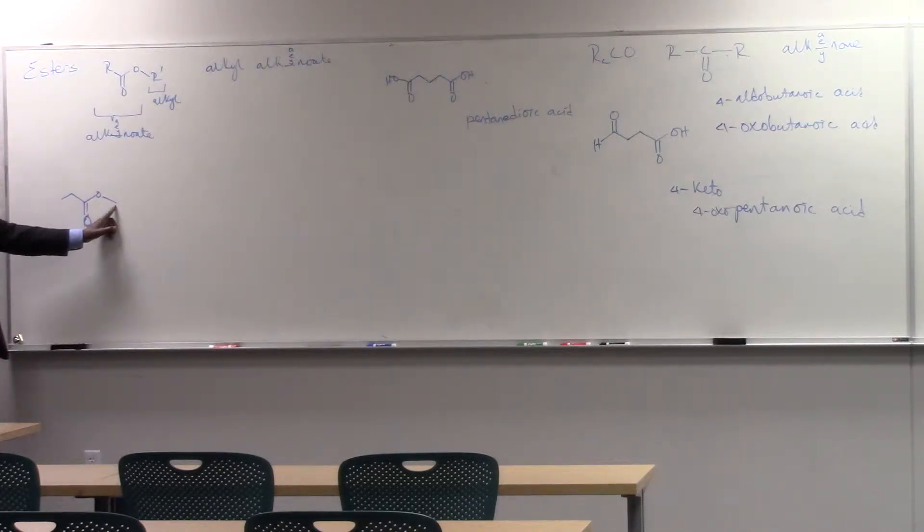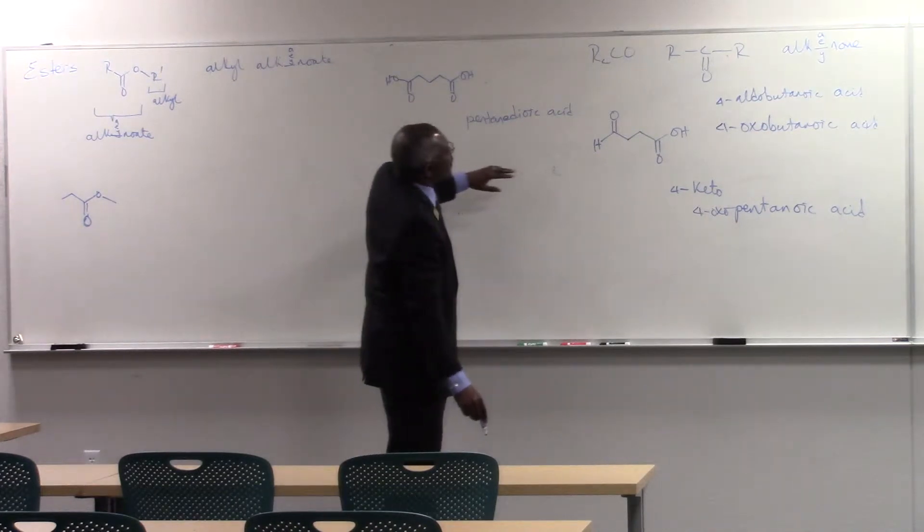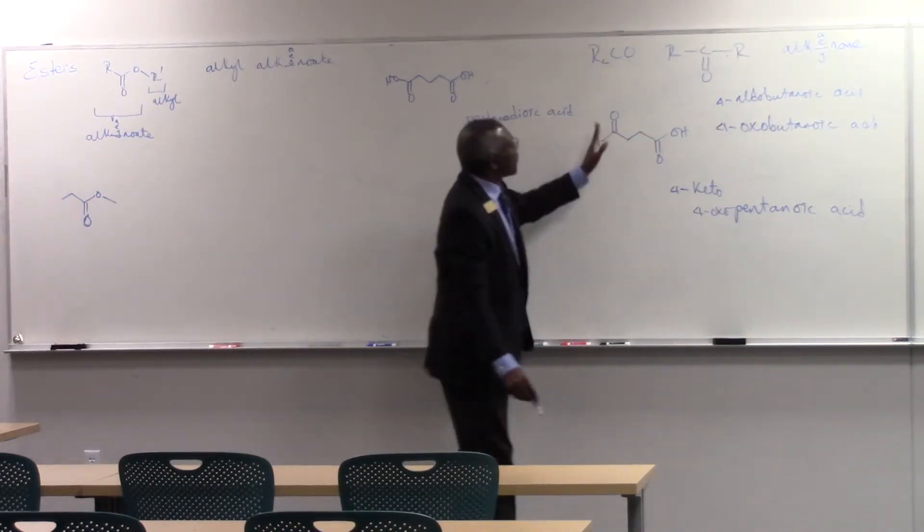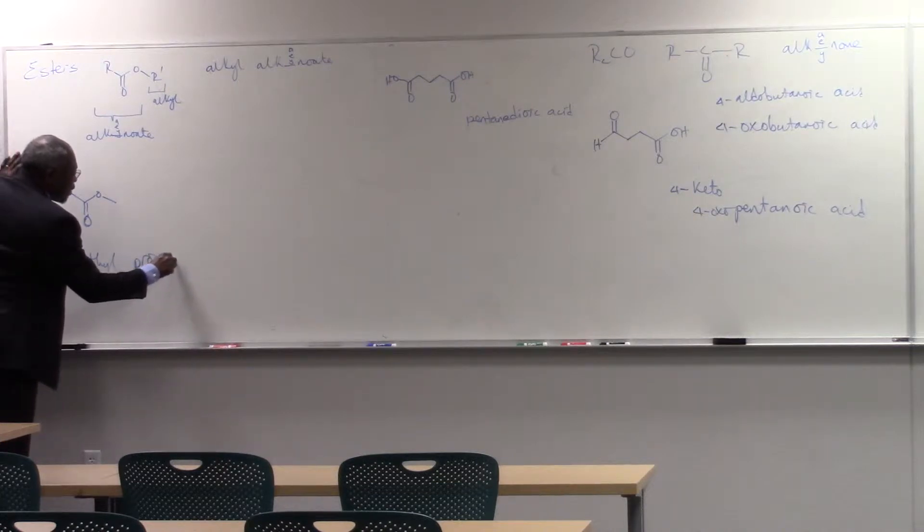This group is methyl. This really is the Alkanoate coming from the Alkanoic acid. So this would be called methyl, one word, propanoate.